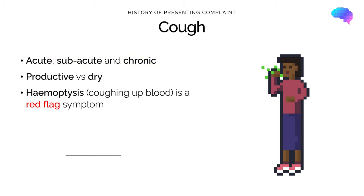It's important in your respiratory history to ask the patient directly about haemoptysis — coughing up blood — as this is a red flag symptom for more serious pathology such as lung cancer.